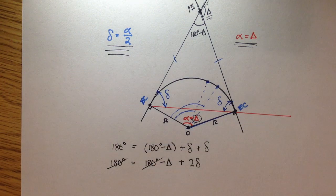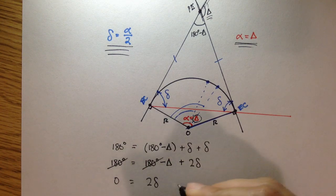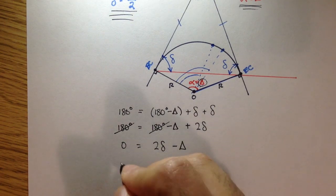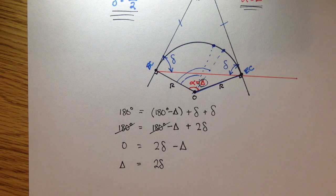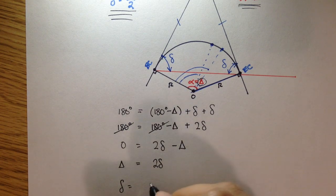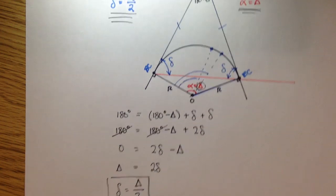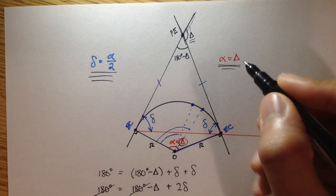You'll see that the 180 on both sides cancels out, and you're left with 0 is equal to 2 delta minus big delta. So, if I added big delta to both sides, I should get delta, or big delta, interior angle, is equal to 2 times the deflection angle. And if I solve for the deflection angle, I should get, well, delta over 2. And there's your proof, and this is in the case where alpha is equal to big delta.